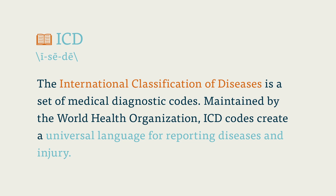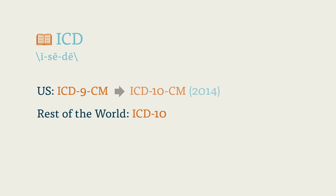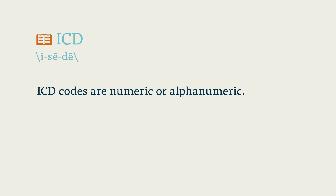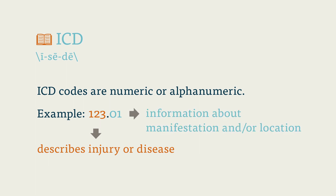ICD. The International Classification of Diseases is a set of medical diagnostic codes established over 100 years ago. Maintained today by the WHO, ICD codes create a universal language for reporting diseases and injury. In the United States, we use ICD-9-CM, while the rest of the world uses some form of ICD-10. The US is slated to upgrade to ICD-10-CM in 2014. ICD codes are numeric or alphanumeric. They have a three-character category which describes the injury or disease, typically followed by a decimal point and two to four more characters, depending on the code set, which give more information about the manifestation and/or location of the disease.